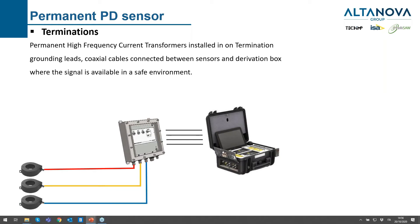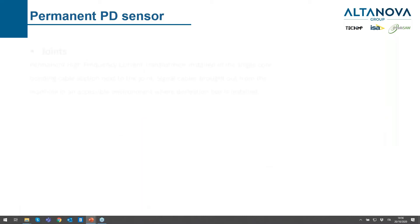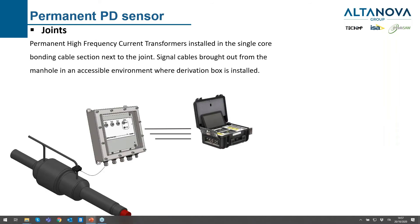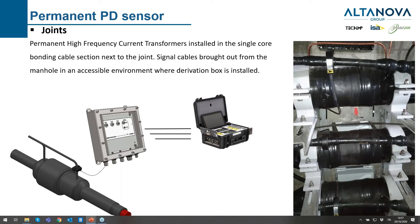On terminations, we can place high frequency current transformers (HFCTs). We have a schematic drawing on the left and a related picture on the right, where you can see the HFCT placed in the link box of a single cable termination. In the joints, HFCTs can also be installed — they should be placed on the single-core side of the bonding cable next to the joint, and the signal can be routed outside with a dedicated box.